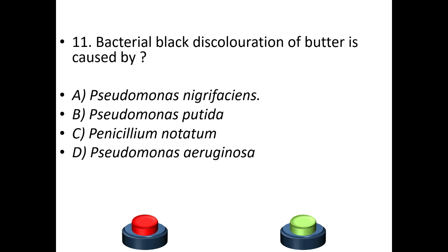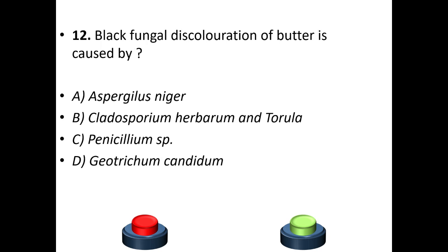Eleventh question: bacterial black discoloration of butter is caused by A: Pseudomonas putida. B: Penicillium natatum. C: Pseudomonas aeruginosa. D: Pseudomonas nigrificans. The answer is option A — Pseudomonas nigrificans. Twelfth question: black fungal discoloration of butter is caused by A: Aspergillus niger. B: Cladosporium herbarum. C: Penicillium species. D: Geotrichum candidum.